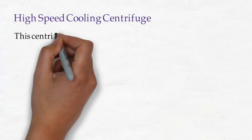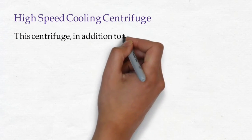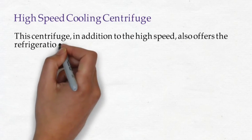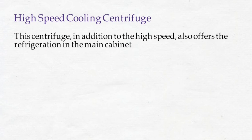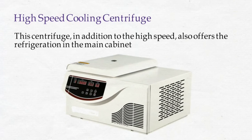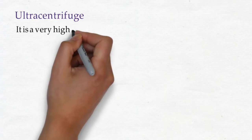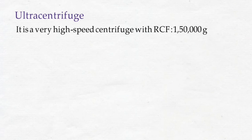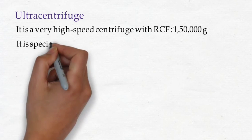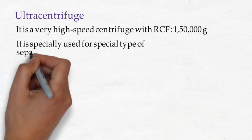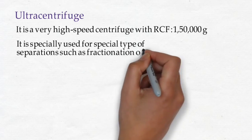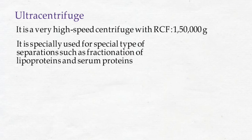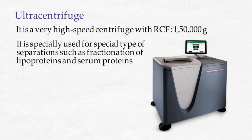Next is the high speed cooling centrifuge, which in addition to high speed also offers refrigeration in the main cabinet. The last type is the ultracentrifuge — a very high speed centrifuge with an RCF of 150,000 times gravity, specially used for separation such as fractionation of lipoproteins and serum proteins. Here is the working model example.